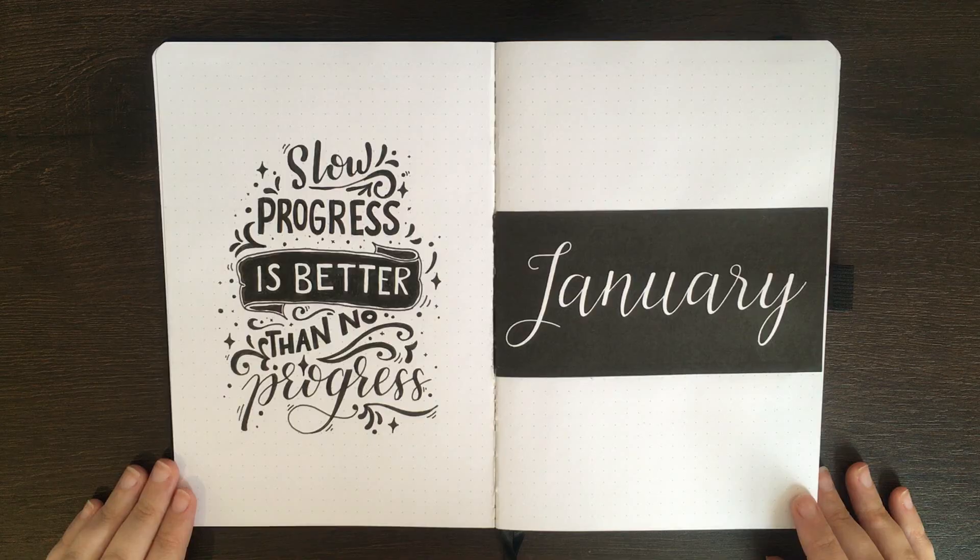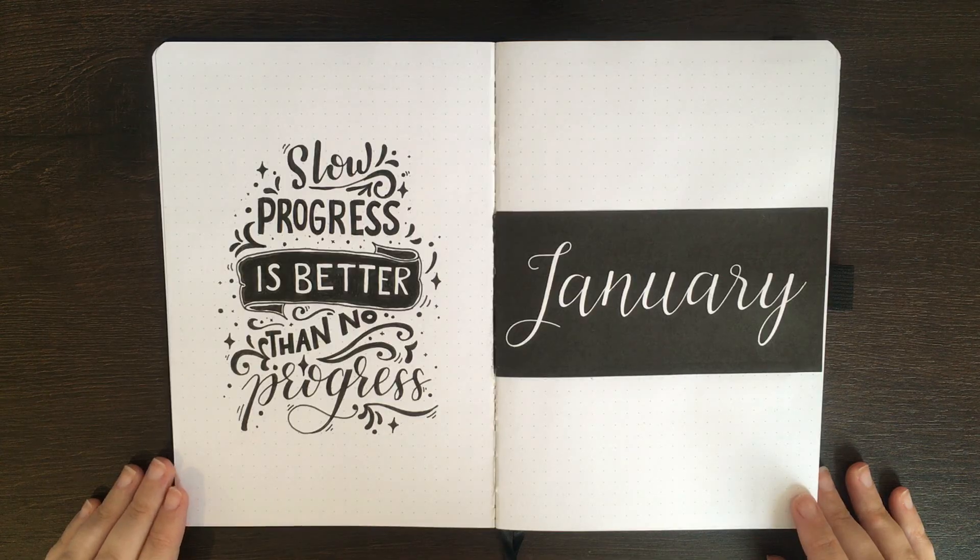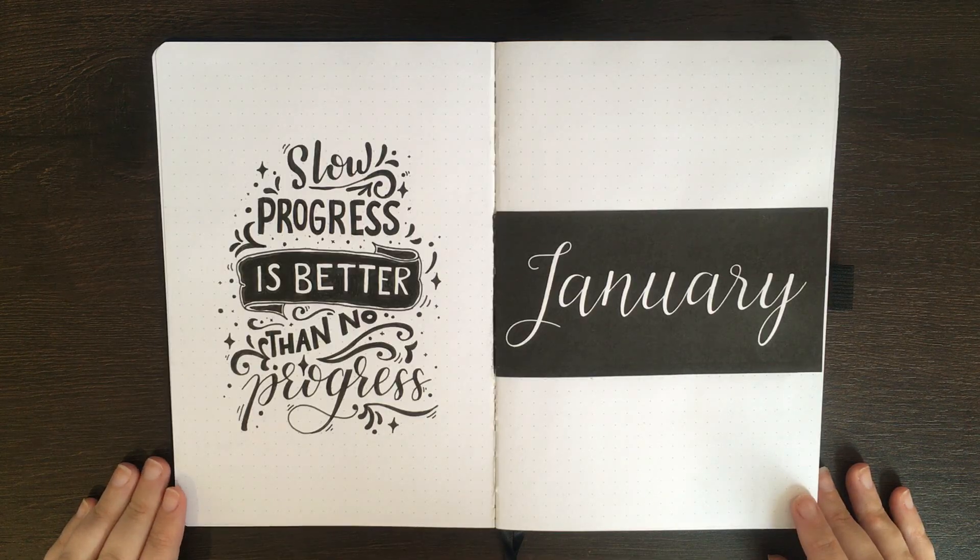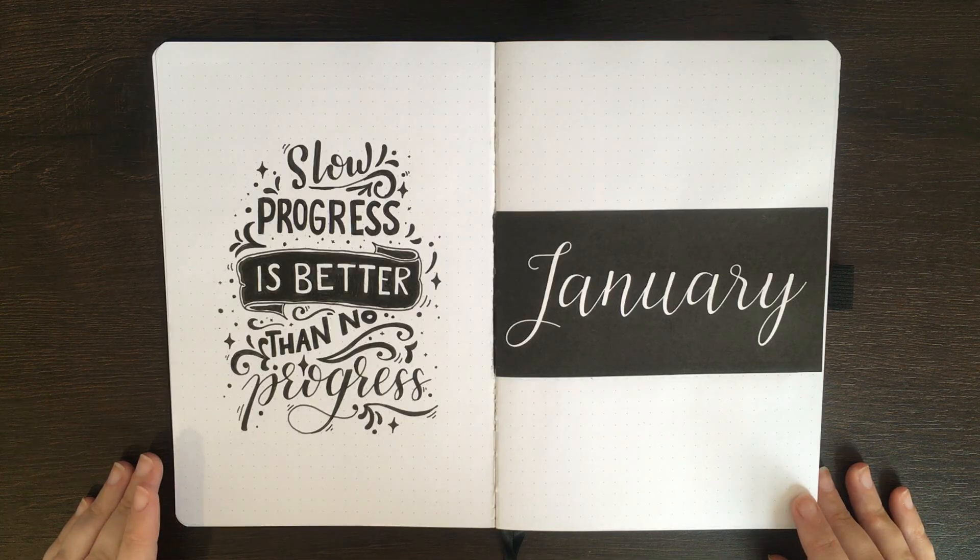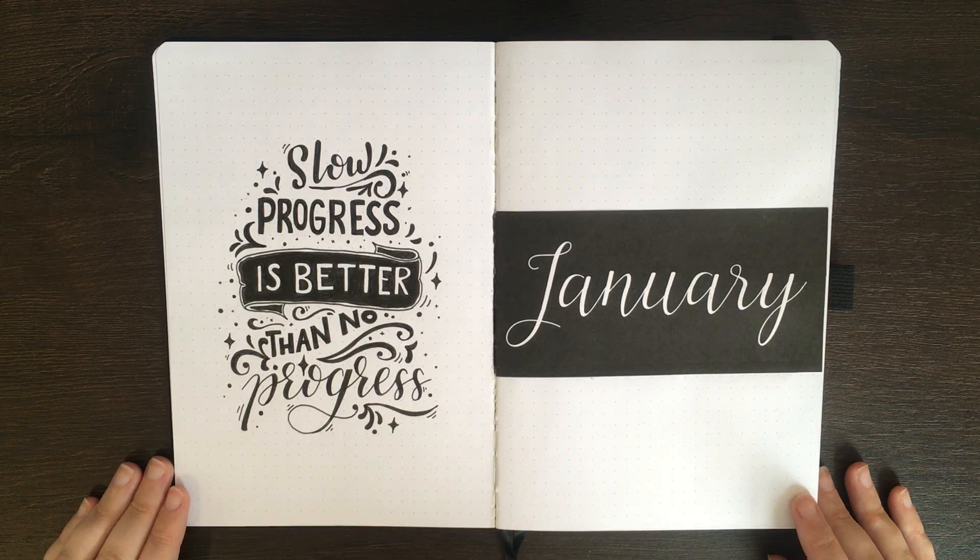So as you'll remember from my last monthly plan with me, my theme for January was black and white and tangles. Although it wasn't my first choice for a theme, I did certainly enjoy going a little bit more monochromatic this month and really just going back to tracking things in more simplistic ways.